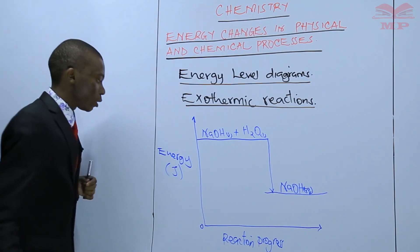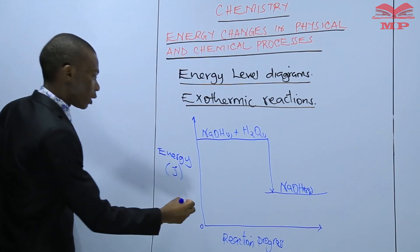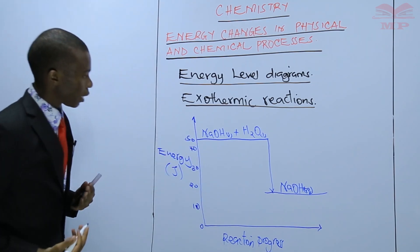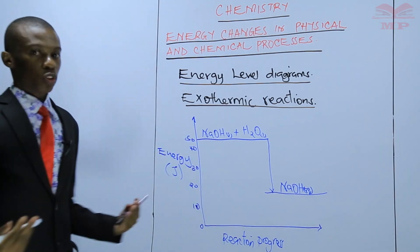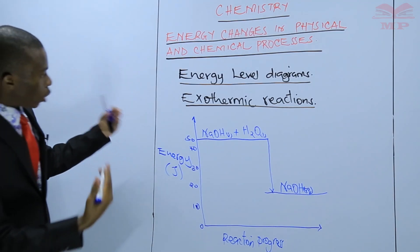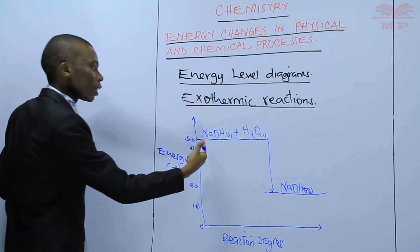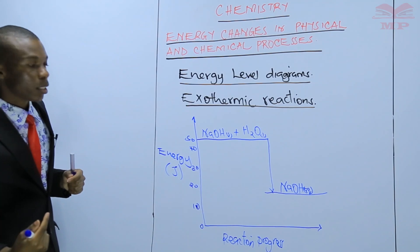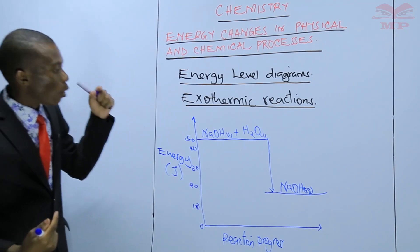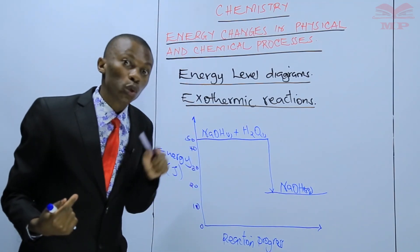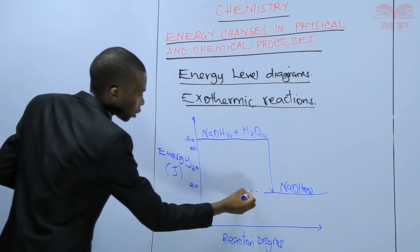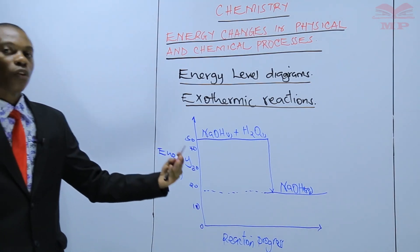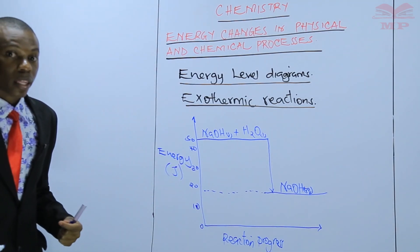When drawing the graph, you start from 0. The scale goes 0, 10, 20, 30, 40, 50 — though we are not drawing it to scale, it is just for demonstration purposes. The reactants — sodium hydroxide and water — have 50 joules of energy. The product, which is sodium hydroxide solution, has around 20 joules of energy. You can see that the energy of the reactants is higher than the energy of the product.